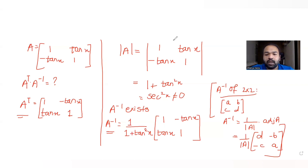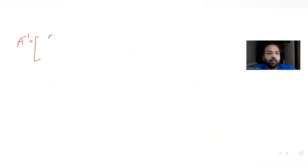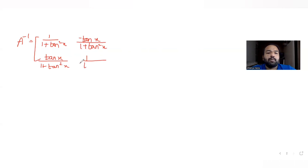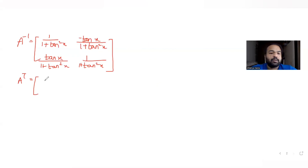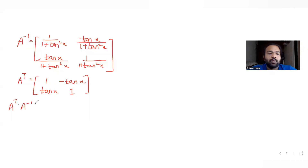Let's write out both matrices for multiplication. A inverse is: [1/(1+tan²x), -tan x/(1+tan²x); tan x/(1+tan²x), 1/(1+tan²x)]. A transpose is: [1, -tan x; tan x, 1]. Now we take the product A transpose times A inverse.